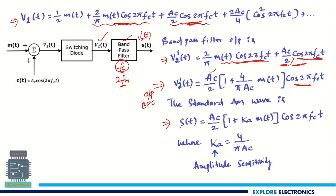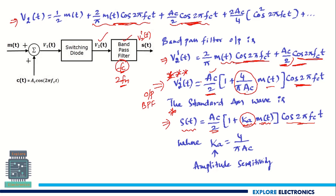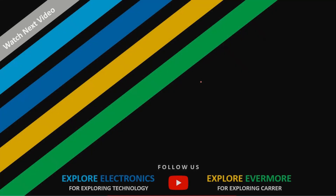Comparing this with the standard AM wave S(t) = (Ac/2)·[1 + Ka·M(t)]·cos(2πFct), we can see that Ac/2 is as is, the amplitude sensitivity Ka equals 4/(π·Ac), and M(t) is the modulating signal. This is the AM wave we get at the output of the bandpass filter. This is how we can generate the AM wave using a switching modulator. In the next video, let us see how demodulation works — that is, how the envelope detector is going to detect and recover the modulating signal back. Thank you.